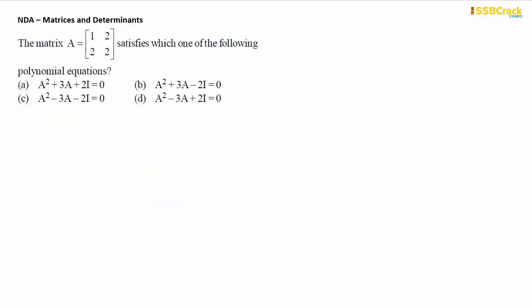Next question: Matrix A = [1, 2; 2, 2] satisfies which polynomial equation? Options: A² + 3A + 2I = 0, A² + 3A − 2I = 0, A² − 3A − 2I = 0, or A² − 3A + 2I = 0. The goal is to find how A², 3A, and 2I must be combined with addition and subtraction to give the null matrix.